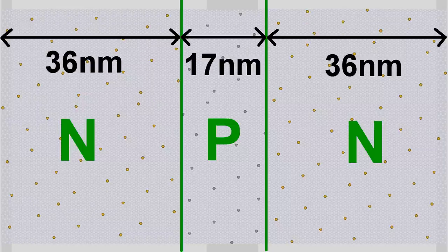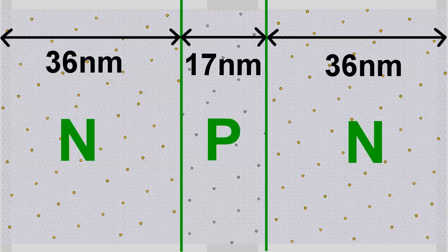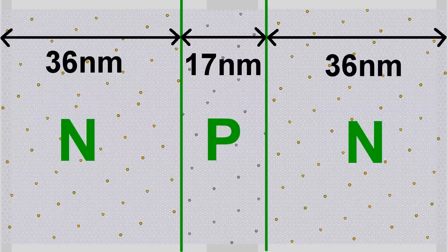The width of the two N-doped layers is 40 atoms, which is approximately 36 nanometers, and that of the P-doped layer is 20 atoms, which is approximately 17 nanometers.